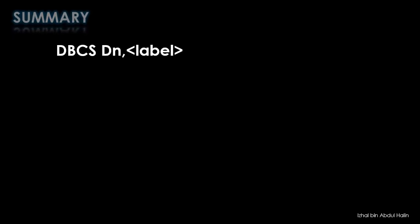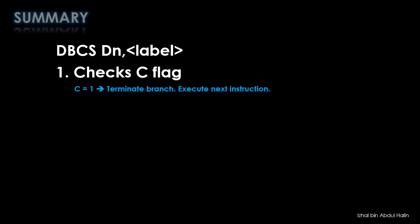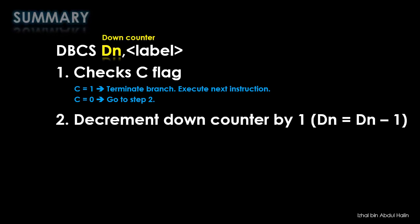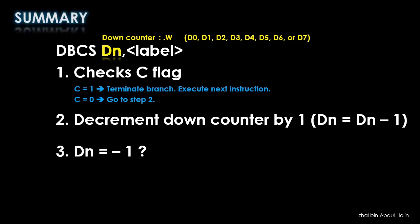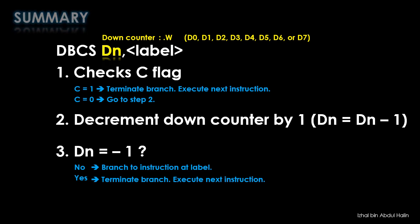Hopefully by now you understand how all DBCC instructions work. To summarize: when the DBCS instruction is executed, it checks the C flag. If C equals 1, the 68k microprocessor terminates the branch by executing the next instruction after the DBCS instruction. If C equals 0, it proceeds to initiate the branch. In the second step, a down counter is decremented. The down counter is 16 bits wide and can be any data register in the 68k microprocessor. Once decremented, its value is checked against negative 1. As long as the value is not negative 1, a branch to the label is executed. If it equals negative 1, the branch is terminated.